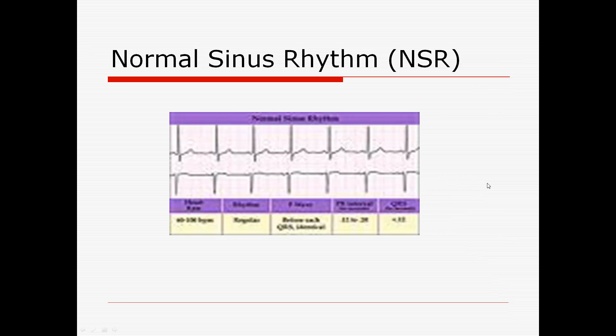Look at this — do we have a P wave in front of each QRS and a T? P wave in front of each QRS and a T? Yes we do. This is a normal sinus rhythm. If we add up the beats per minute on a six-second strip and add up the QRS complexes, we have 70 beats per minute.